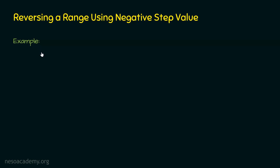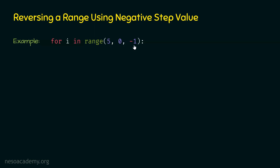Let's say that we want to print numbers from 5 to 1 — that is, 5, 4, 3, 2, and 1 on the screen. For this purpose, we can use this for statement: for i in range(5, 0, -1). In this case, the start value is 5, the stop value is 0, and the step value is minus 1.